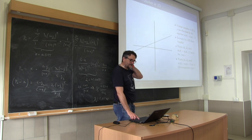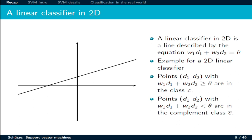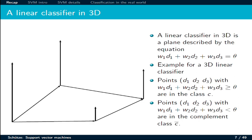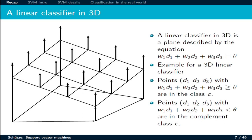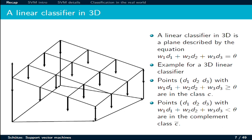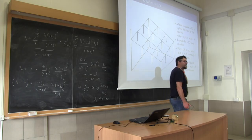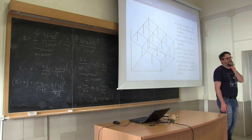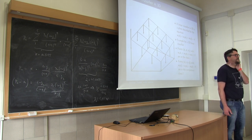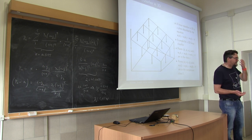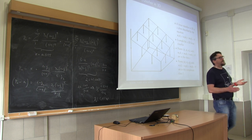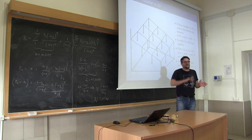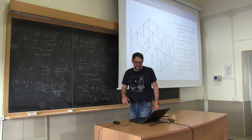This is also true for a line in the two-dimensional case — above the line, below the line — or with a hyperplane or plane, above and below. The purpose of a linear classifier is simply to identify this line, plane, or hyperplane which allows you to separate one class from the other.